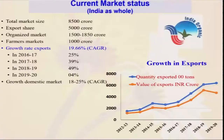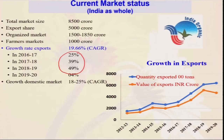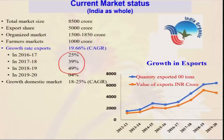Our total organic market in India is 8,500 crore and the export size is 5,000 crore — every year we are exporting 5,000 crore worth of organic produce. Looking at the growth from 2016-17 to 2018-19, it was 25 percent, 39 percent, and 49 percent. This production and market growth is very tremendous. In the near future there is too much scope. The total foreign exchange earned from organic exports has also increased significantly over the years.